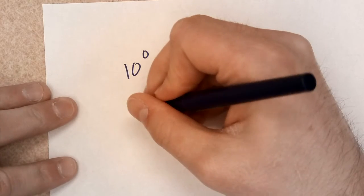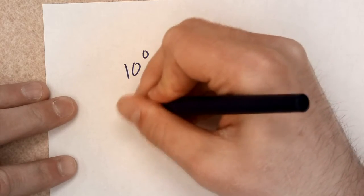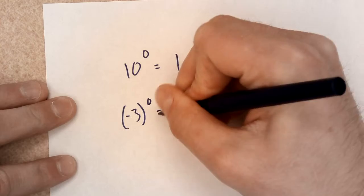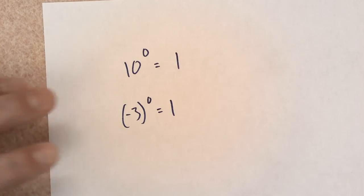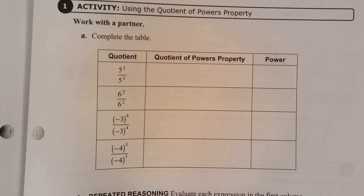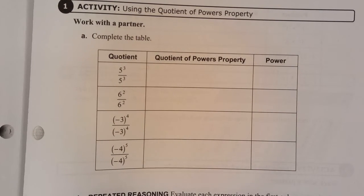Anything to the zero power, how about negative three to the zero power? Anything to the zero power is just one. Now, this activity gives you some explanation as to why that's the case.